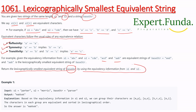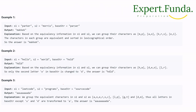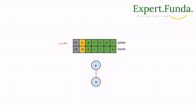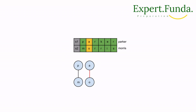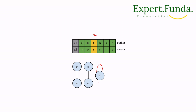Let's see the first example. We have s1 as 'parker' and s2 as 'morris', and we need to find the smallest lexicographic equivalent string. At each index, we pair characters: at index 0 we have 'p' and 'm', at index 1 we have 'a' and 'o', at index 2 both strings have the same character so it points to itself.